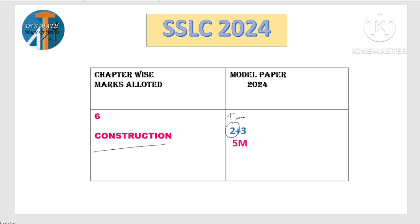Construction: 2 marks ಗೆ tangent construction ಕೊಡ್ತಾರೆ, 3 marks ಗೆ triangle construction ಕೊಡ್ತಾರೆ. So 5 marks ನೀವು easily score ಮಾಡಬಹುದು — 5 marks for construction chapter.